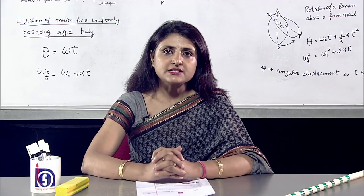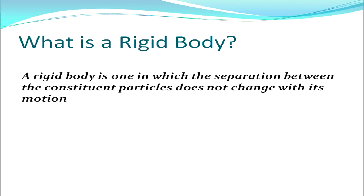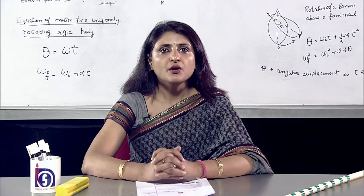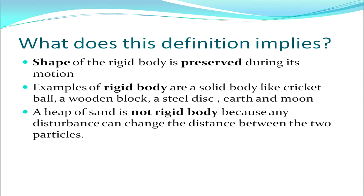Let's start with what is a rigid body. A rigid body is one in which the separation between the constituent particles does not change with its motion. This implies that the shape of the rigid body is preserved during its motion. Examples of rigid bodies are solid bodies like a cricket ball, a wooden block, a steel disc, earth, and moon.